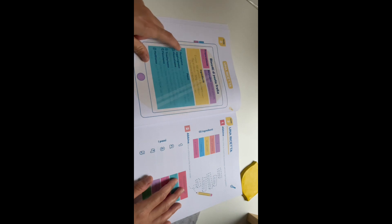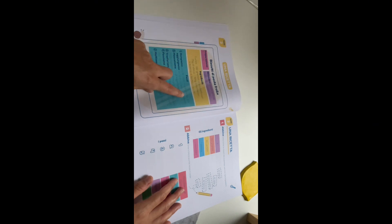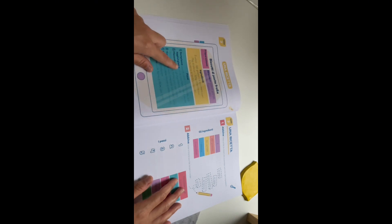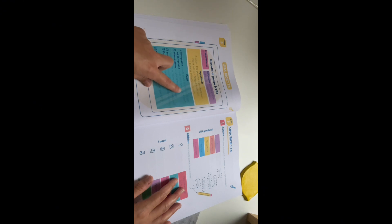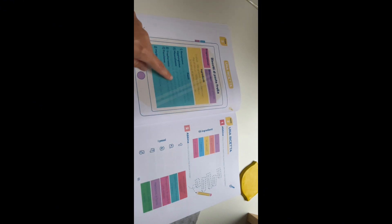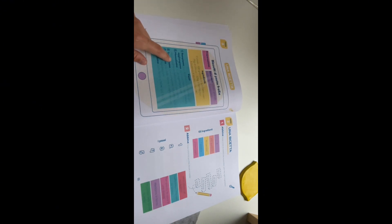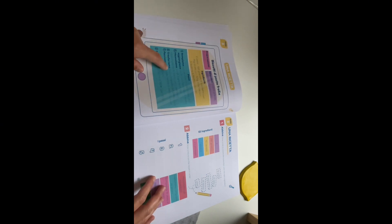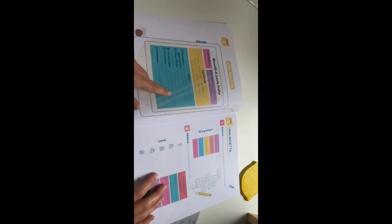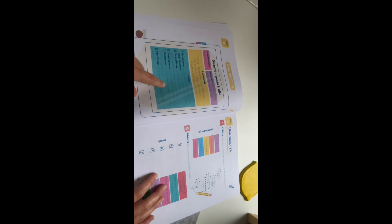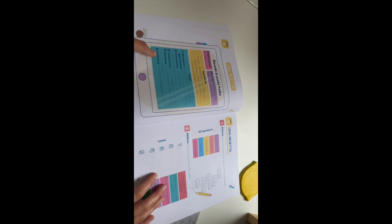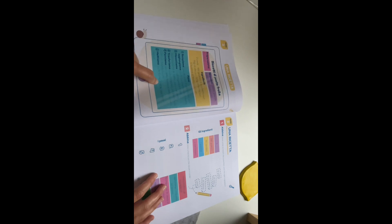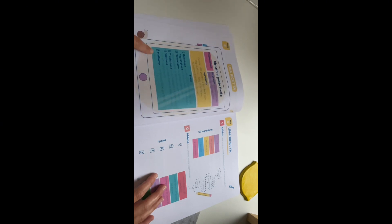Passi. Rompiamo le uova in una ciotola. Poi aggiungiamo lo zucchero, l'olio e il lievito. Mescoliamo gli ingredienti. Poi aggiungiamo la farina, poco per volta. Trasferiamo l'impasto sul piano. Facciamo delle forme a stella con un taglia biscotti. Mettiamo in forno a 180 gradi per 10 a 12 minuti.